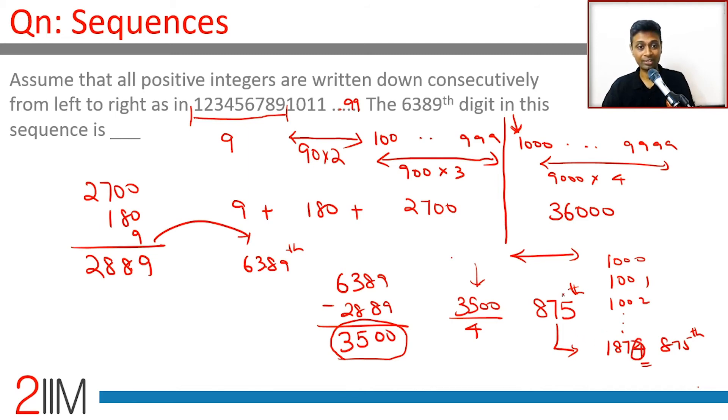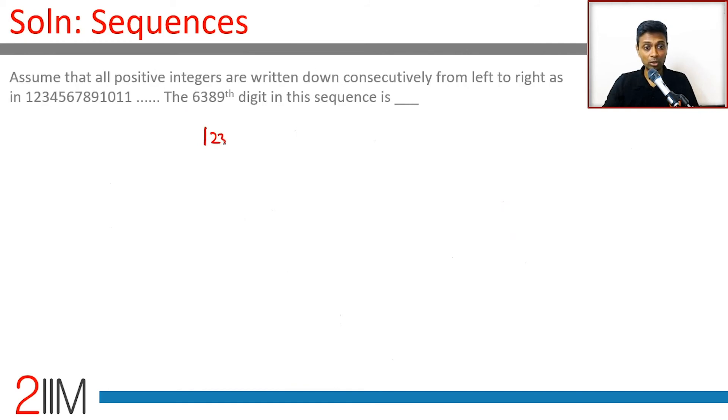And so just to recap this: 1, 2, 3, 4 till 9, 10, 11, 12 till 99, 100, 101 till 999, and then 1000, 1001 till 1874. 9 digits here, 180 digits here, 2700 digits here.